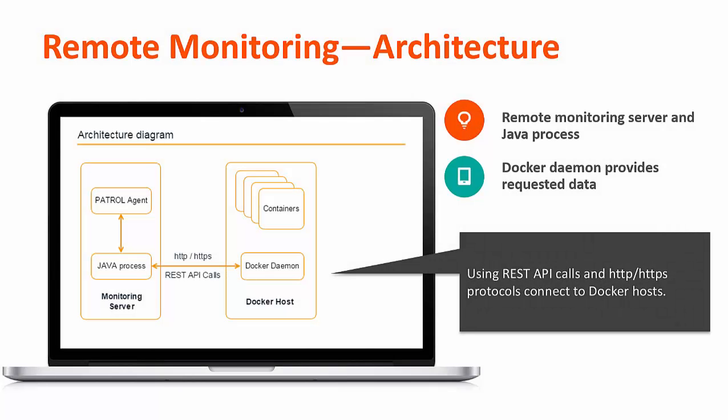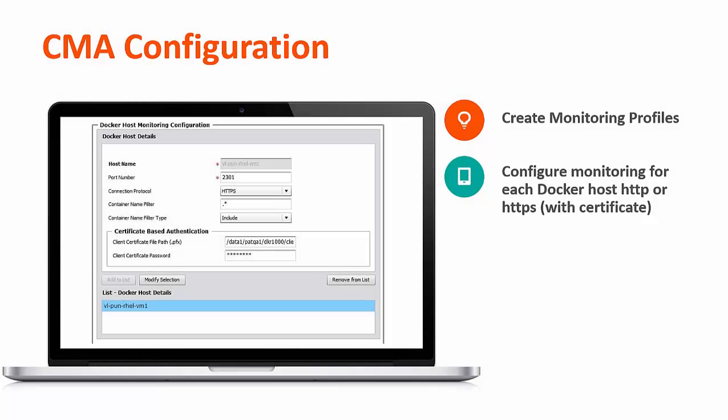Looking at the architecture, you can see that we have our monitoring server on one side, and then we're making HTTP or HTTPS REST API calls to the Docker daemon that's usually running in the cloud — a public or private cloud. So we have remote monitoring so that you can quickly see the data that you need.